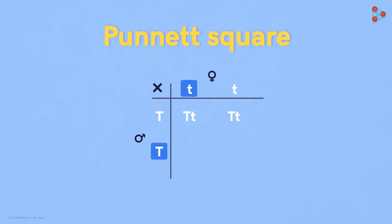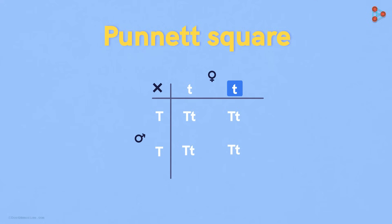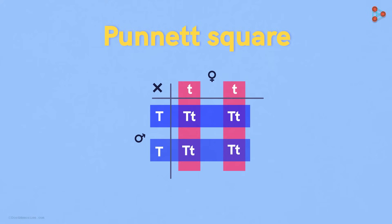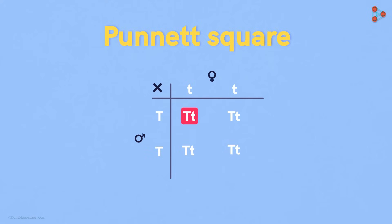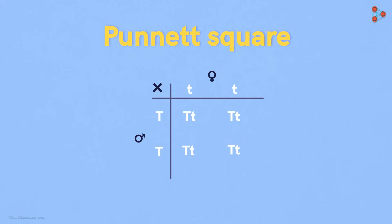This one will combine with this to give us this set. Yes, you guessed it right — these two alleles will give us this set in the offspring. It's a simple concept of respective row and column pairing for each slot. For this slot, it's the first row and the first column. For this slot, it's the first row and the second column pairing, and so on.